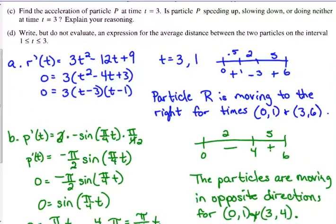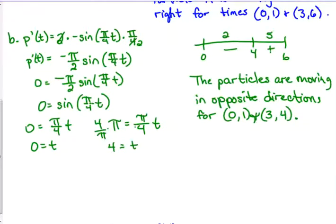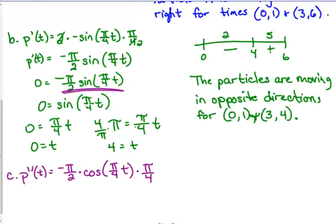Part C. Find the acceleration of particle P at time 3. Is the particle speeding up, slowing down, or doing neither? Acceleration, we've got to take the derivative again. We just found the derivative of P, we need to find the second derivative of P. So the derivative of that, keep the negative pi over 2 in front. The derivative of sine is cosine, pi over 4T times pi over 4. When we simplify that, we get negative pi squared over 8 cosine of pi over 4T. That is the second derivative.